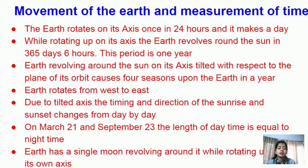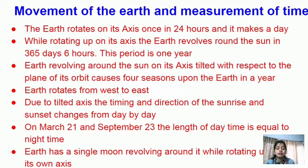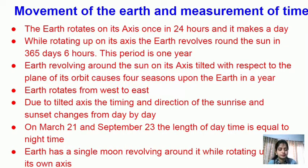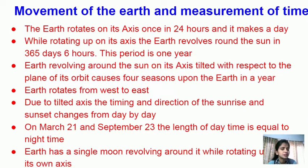Earth rotates on its axis once in 24 hours. To complete one revolution around the Sun takes 365 days and 6 hours, which makes one year. Earth revolves on an axis tilted with respect to the plane of its orbit, which causes four seasons — winter, summer, monsoon and autumn. Due to this tilted axis, sunrise and sunset times change day to day. On March 21 and September 20, the length of daytime and nighttime is equal.